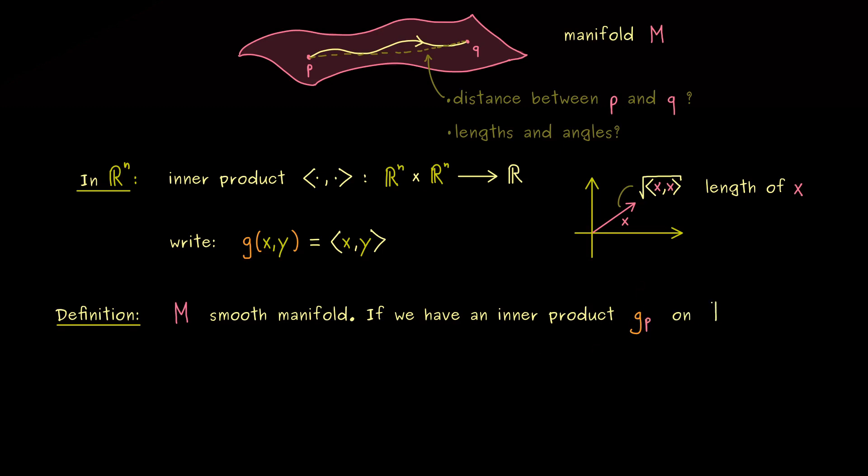Moreover, the inner product on T_p M is denoted by g_p. Hence you could say each tangent space here gets a geometry by fixing such an inner product. So this means inside the tangent space we are able to measure lengths and angles. Therefore, to extend this property to the whole manifold, we need these inner products at each point p in M.